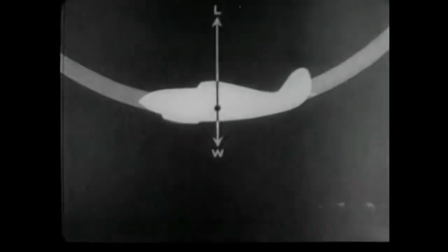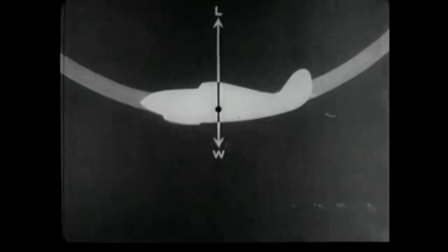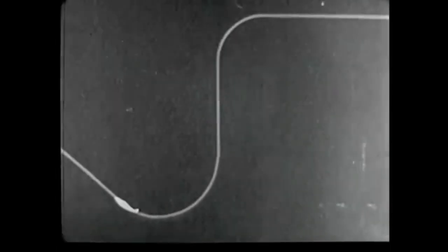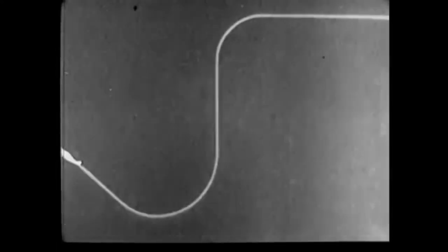In pulling out of the dive, the angle of attack must be increased slowly. During this maneuver, the lift may attain several times the value of the weight. This increase in lift produces acceleration, which in turn produces a curved flight path.